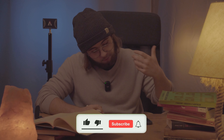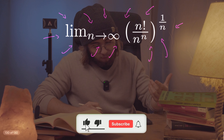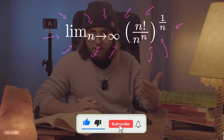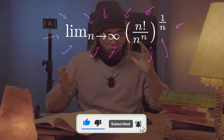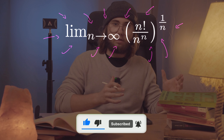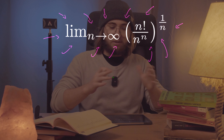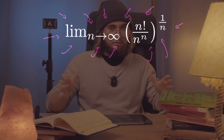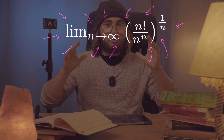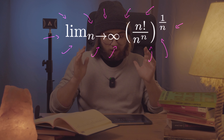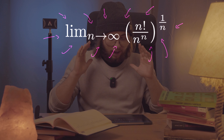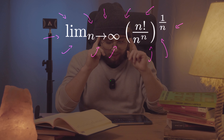Let's get straight to the limit. We're supposed to evaluate the limit as n approaches infinity of n factorial over n to the power of n, everything to the power of one over n.